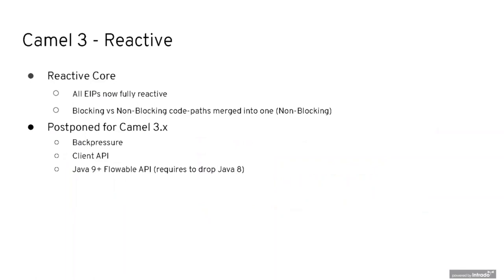One of the goals for CAMEL 3 was the reactive part. CAMEL 2 had more of a semi-reactive approach, whereas in CAMEL 3 we make all the EIPs fully reactive. We also introduced a total non-blocking approach — in CAMEL 2 there was a mixture of blocking and non-blocking. Some reactive features we had to postpone, specifically back pressure and the Flowable API from Java 9, which will be part of the next release.